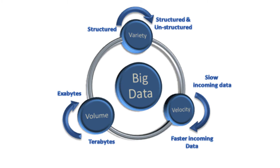Big data is typically classified with three Vs: volume, velocity, and variety. Volume is how much data you actually take in. Velocity is how fast that data is coming in — can you process the data faster than it's actually coming in? And variety is what type of data you have: structured, unstructured, video, and so forth.